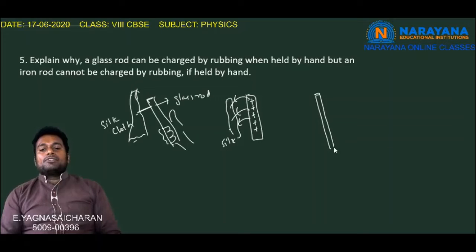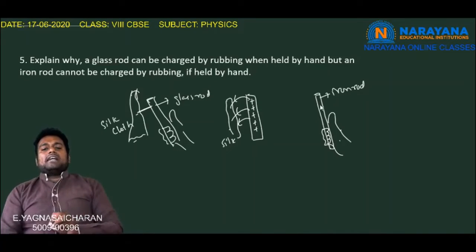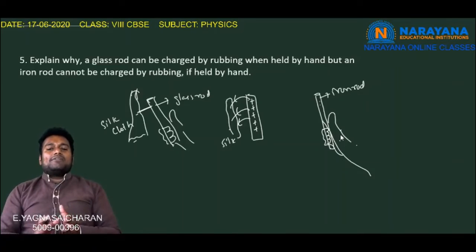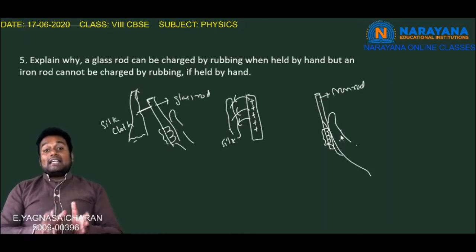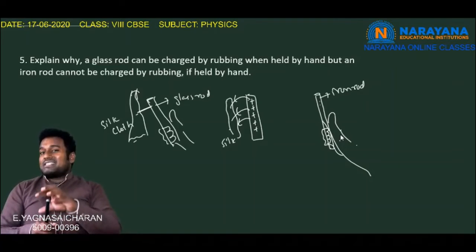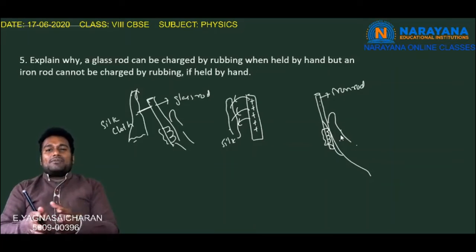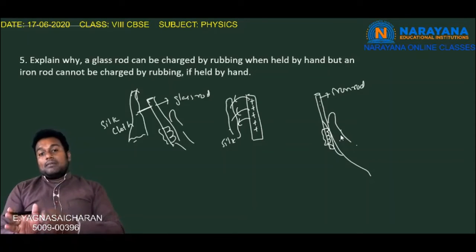If we consider an iron rod held by hand, the moment we charge the iron rod with any material, the charges created are transferred through our hand and body. So the charges do not reside for any significant time, compared to a glass rod. This is why a glass rod can be charged by rubbing when held by hand, but an iron rod cannot — because the iron rod is a conductor and all charges are transferred through our body.